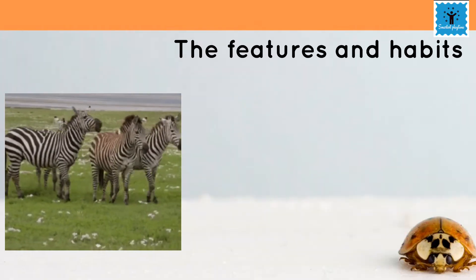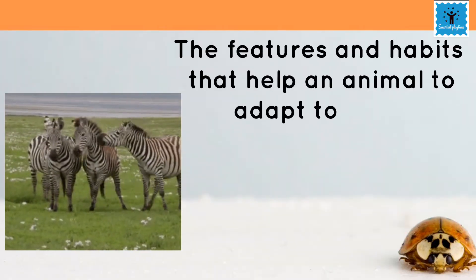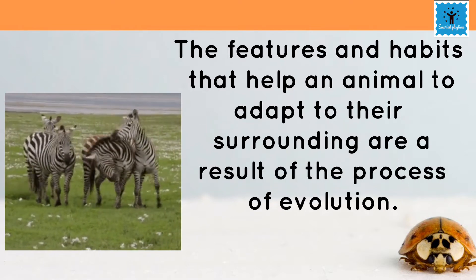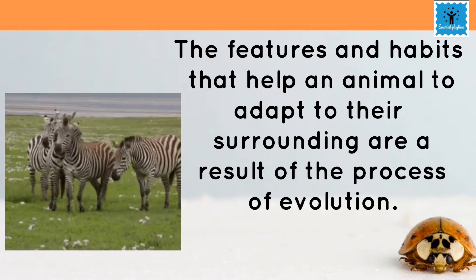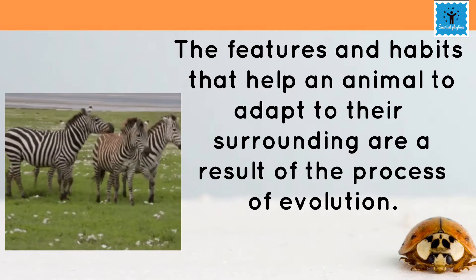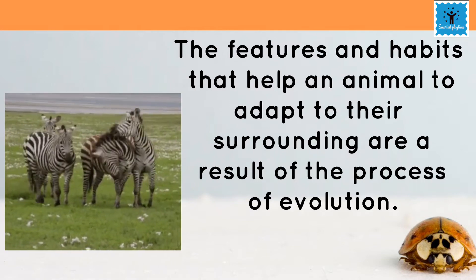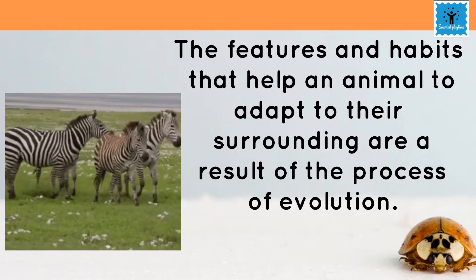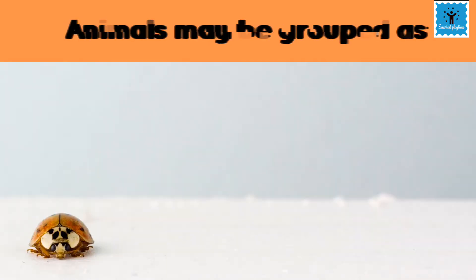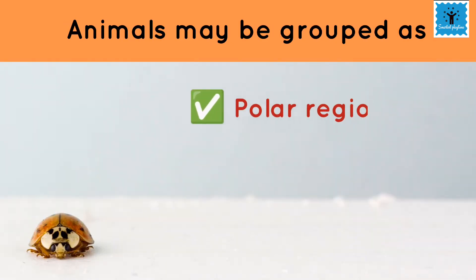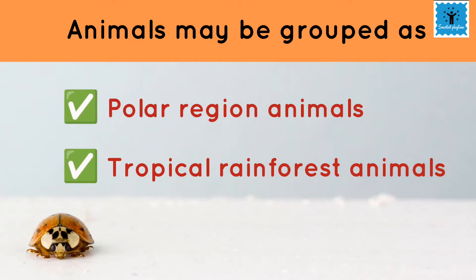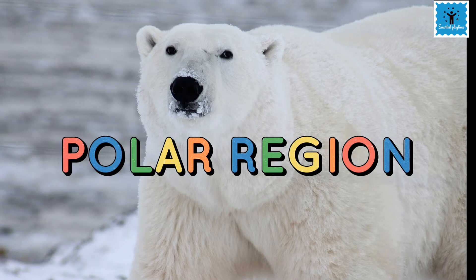The features, habits, or special characteristics that help an animal to adapt to their surroundings or the environment are the result of a long process of evolution. According to their habitat, animals adapt themselves. These animals may be grouped as polar region animals and tropical rainforest animals.